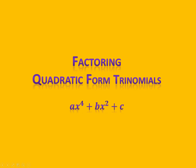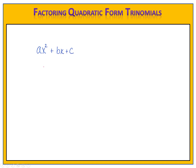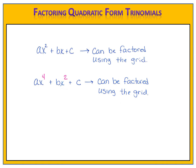In this lesson, we're going to learn how to factor quadratic form trinomials in the form ax to the 4th plus bx squared plus c. In a previous lesson, we learned that you could factor quadratic trinomials ax squared plus bx plus c by using an area model, or as I call it, the grid. Today, we're going to see that there are certain trinomials we can also use the grid for. If they have this exponent combination — x to the 4th, x squared, and a constant — they can be factored using the grid, and it's incredibly useful.